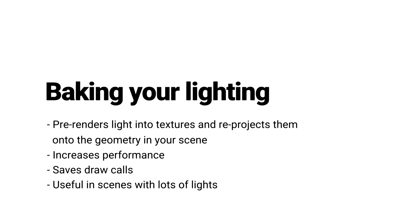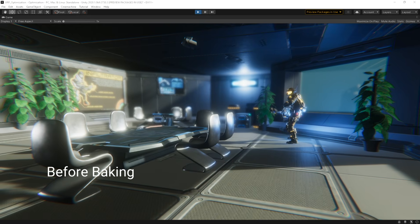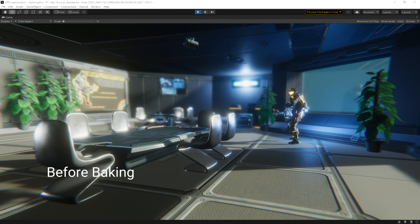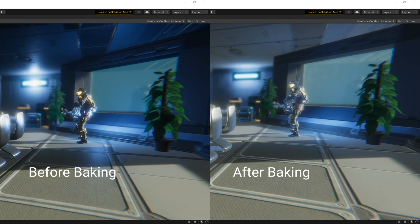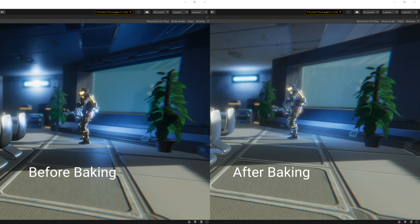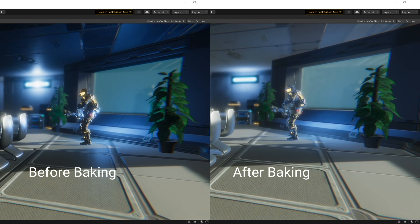Another great reason to bake your lighting is that it allows you to render bounced or indirect lighting in your scene and improve the visual quality. This is known as global illumination and is a process that simulates rays of light bouncing around your environment and illuminating other nearby objects with the bounced light rays. When baked, areas of shadow in your scene will receive the bounced light and will become illuminated. It can be subtle, but this technique spreads the light around your scene more realistically and improves its overall appearance.